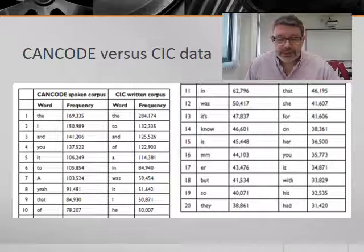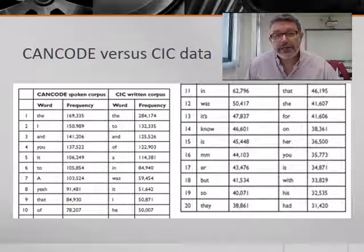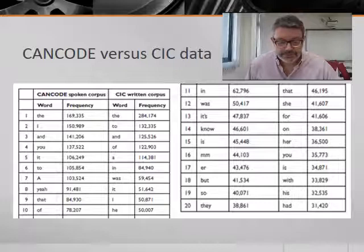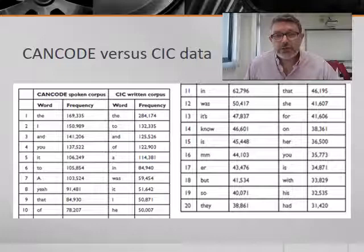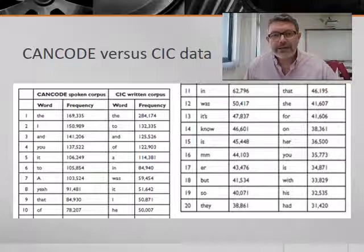Corpus linguistics research then confirms our long-held assumption that there are some basic differences between spoken and written language in relation to the frequency of particular linguistic items. The 20 most frequent items in the CANCODE corpus of speech and a written sample of the Cambridge International Corpus — or CIC — occur with the raw frequencies shown in the table on your slide. We can compare the raw frequencies of these two corpora because they're of equal sizes.